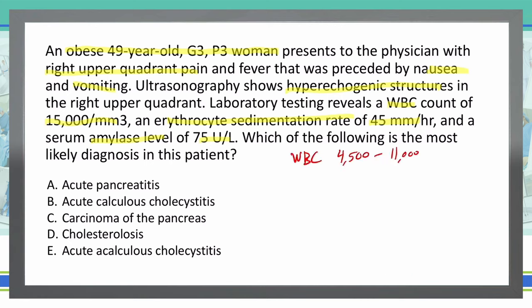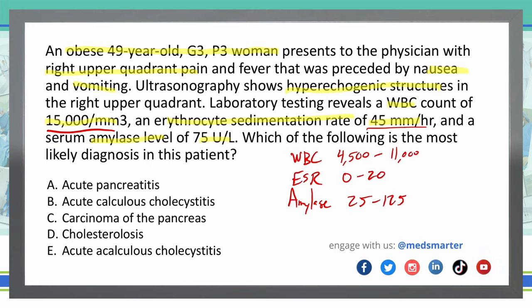A normal white blood cell count is between 4,500 and 11,000, so a white blood cell count of 15,000 is elevated. ESR in females is typically between 0 and 20, so 45 is elevated. Amylase normal values are between 25 and 125, so an amylase of 75 falls right within the normal range.